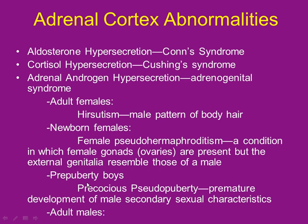In pre-puberty boys with too much DHEA, it's called precocious pseudo-puberty — a false puberty. They start looking like a man: growth spurt, facial hair, armpit hair, pubic hair. Unfortunately, DHEA does nothing to sperm production. So they look like adult men but are incapable of reproducing — still infertile until they go through real puberty.